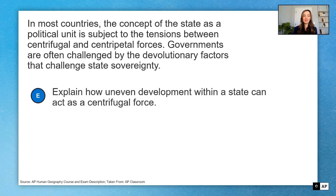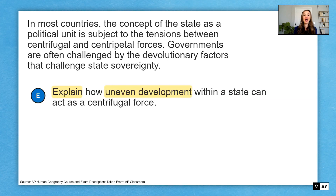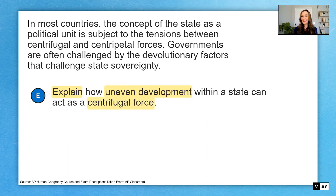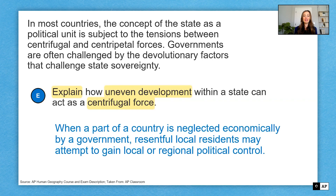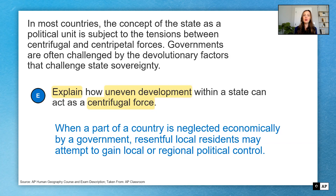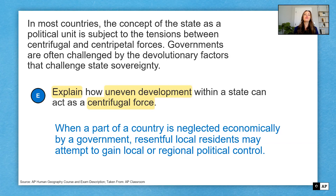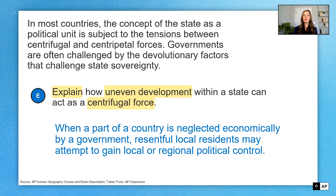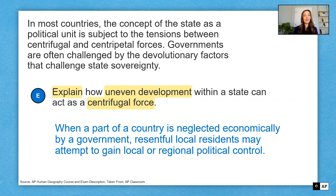Part E says: explain how uneven development — another important concept in AP Human Geography — within a state can act as a centrifugal force. I've got two key concepts here and an explain, so I have a good idea of how much I need to write. I might include something like one part of the country being neglected economically and how that can make local residents resentful. I would build on this with specific real-world examples, and make sure I've got a detailed explanation that includes the how — perhaps even using the word because in my answer — which shows I'm explaining how that uneven development acts as a centrifugal force. If I've done all of that, I can check mark part E and move on to part F.